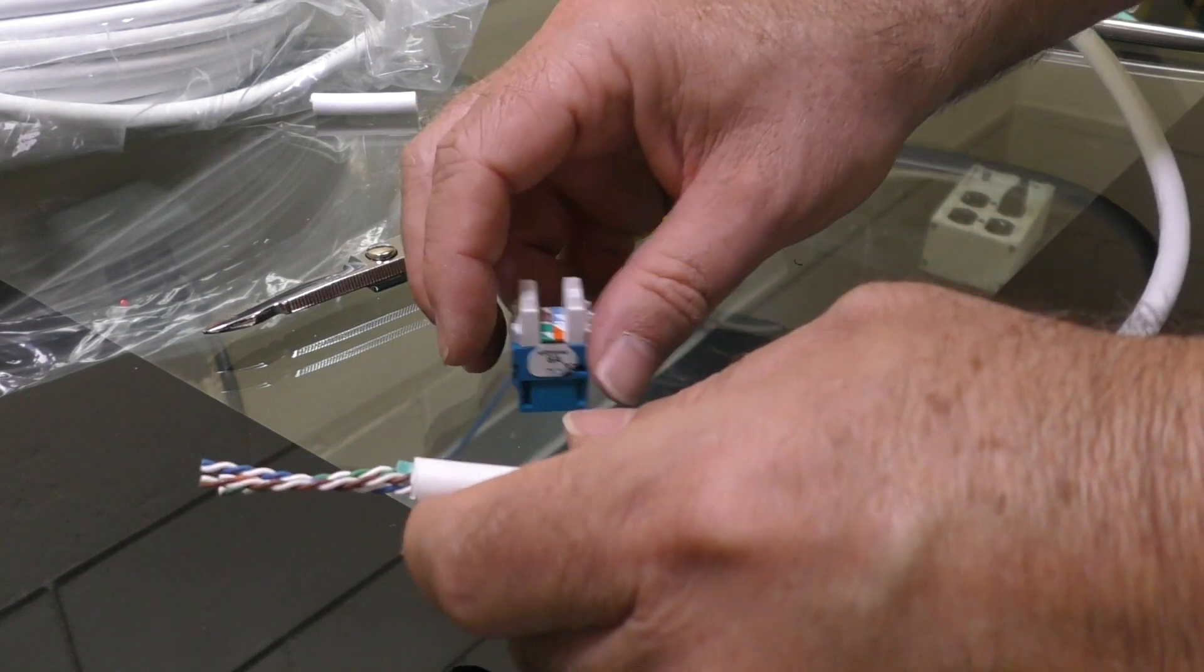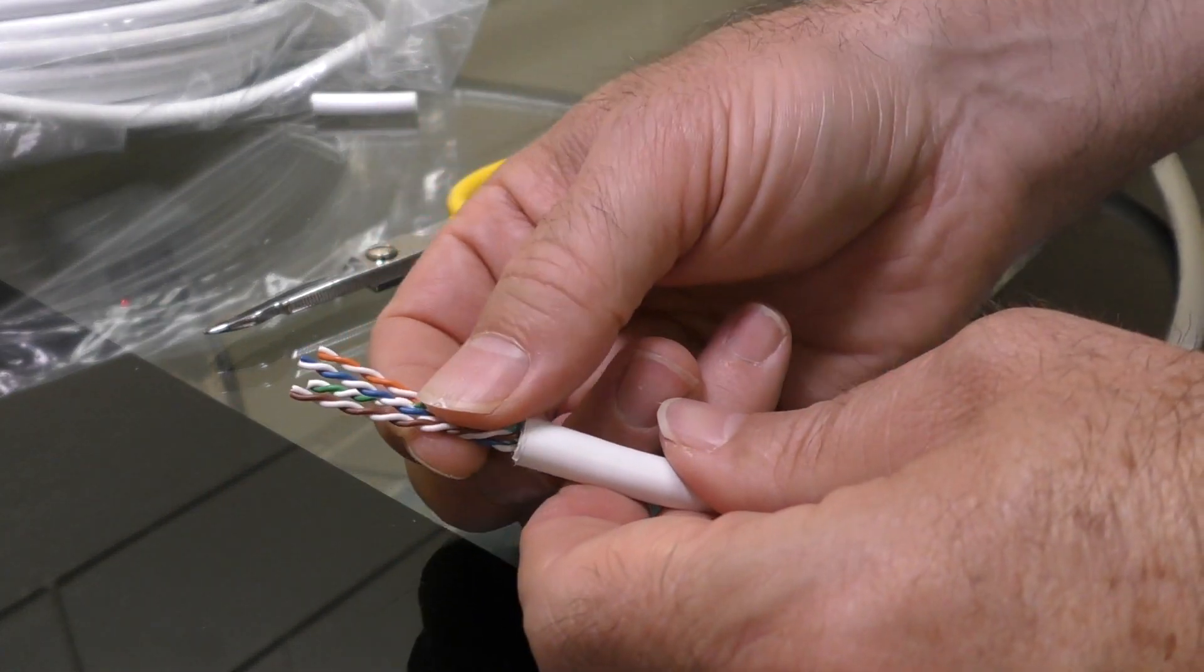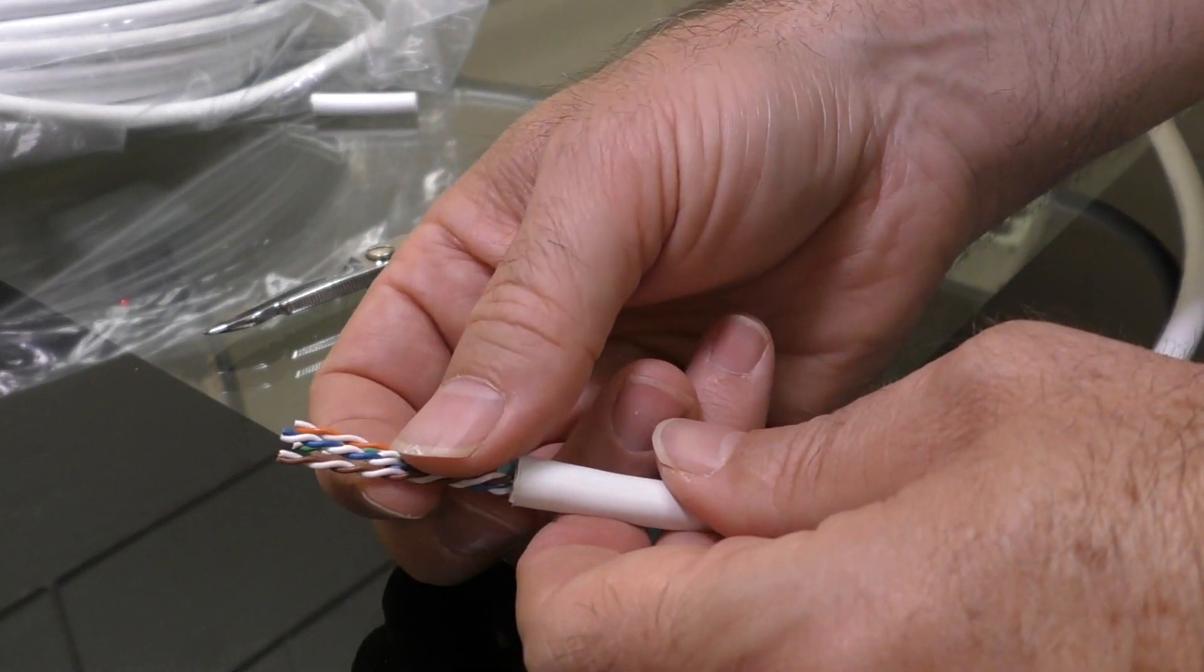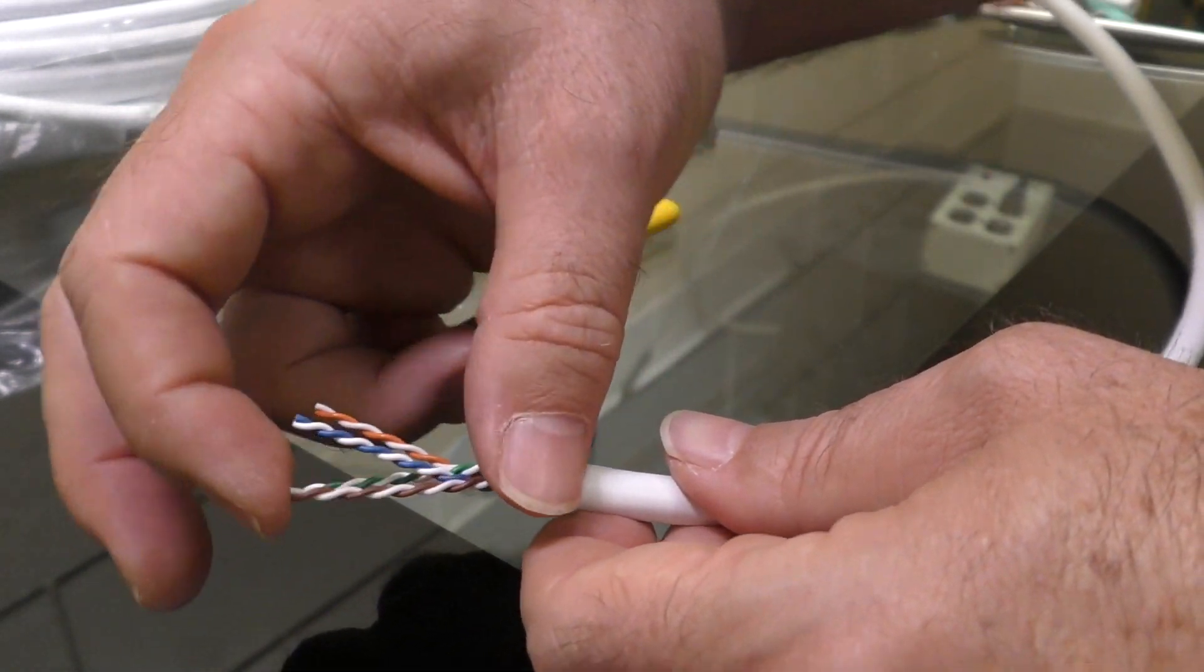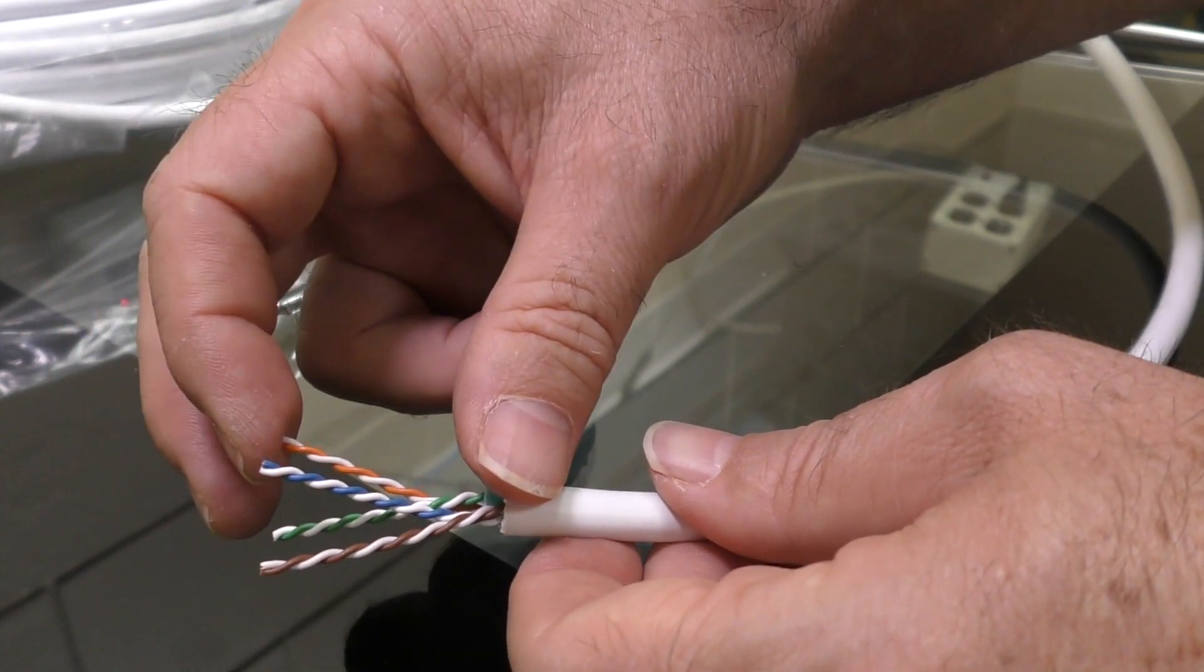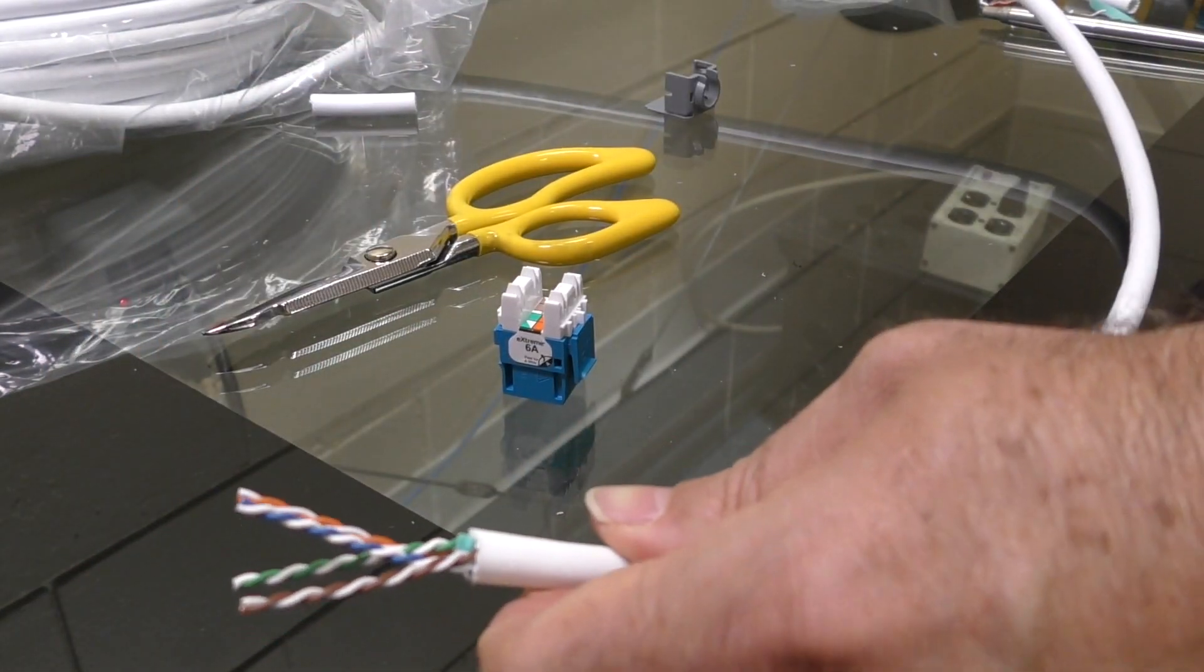Now what you'll notice is that these wires are multicolored. There's a blue, a green, orange, and a brown. Each one is a set of two wires mixed together. They're white-brown, white-blue, white-green, white-orange. These are what are known as pairs.